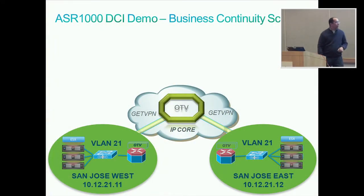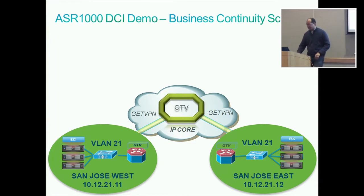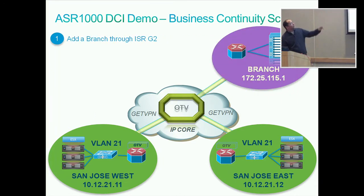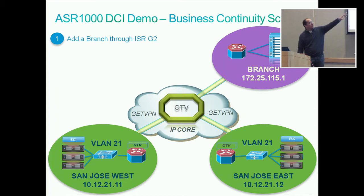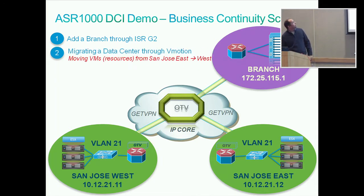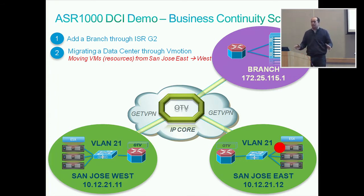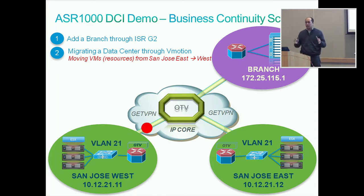This is the basic topology. We have two data centers and these addresses are for the VMs. We're adding a branch — the ISR branch — which has a completely different address. We're going to access one of the media servers based on its IP address and then move the machine across data centers, even though they are completely separated. Today most customers can move machines across different UCSs within the same data center, but when you go across data centers you need something like OTV.